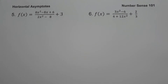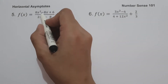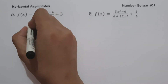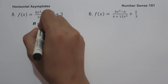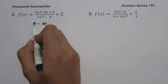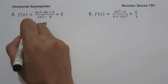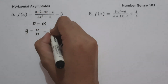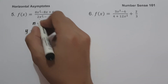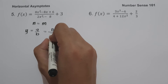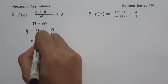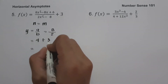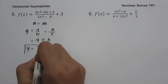Example number five: f(x) equals 8x squared minus 8x plus 6, all over 2x squared minus 8, plus 3. The degree of the numerator equals the degree of the denominator, so we have n equals m. Our horizontal asymptote is y equals a over b. Here a equals 8 and b equals 2, giving 8 divided by 2 equals 4. Adding 3, we get 4 plus 3 equals 7, so our horizontal asymptote is y equals 7.